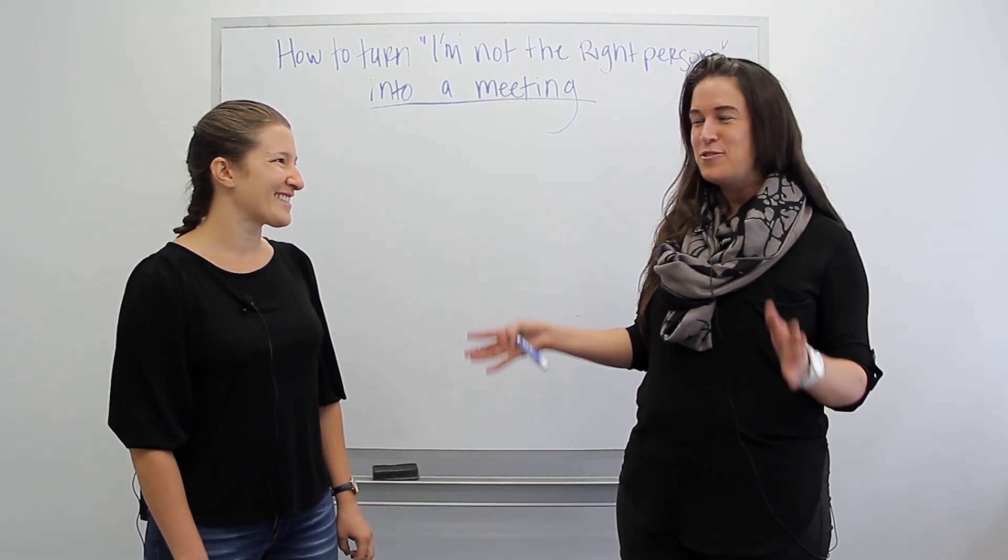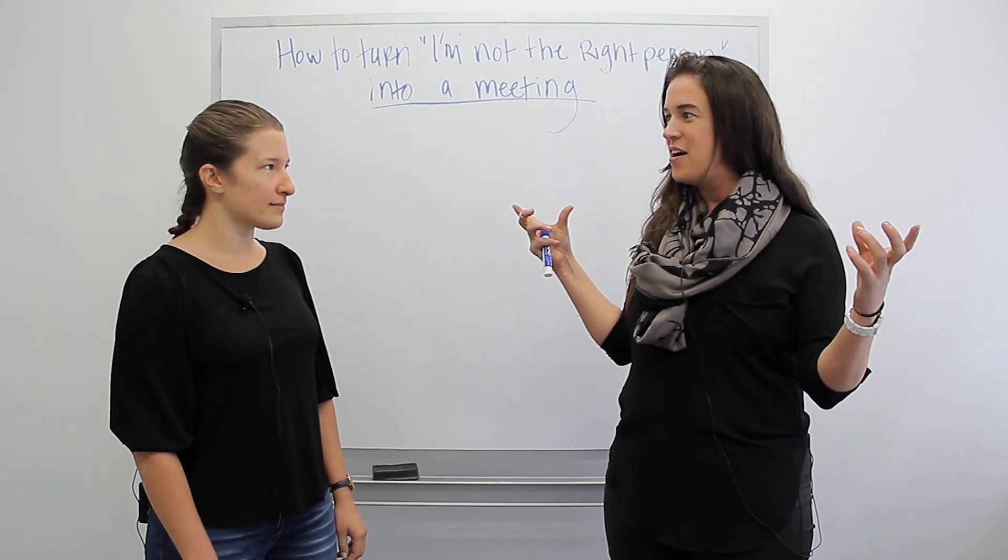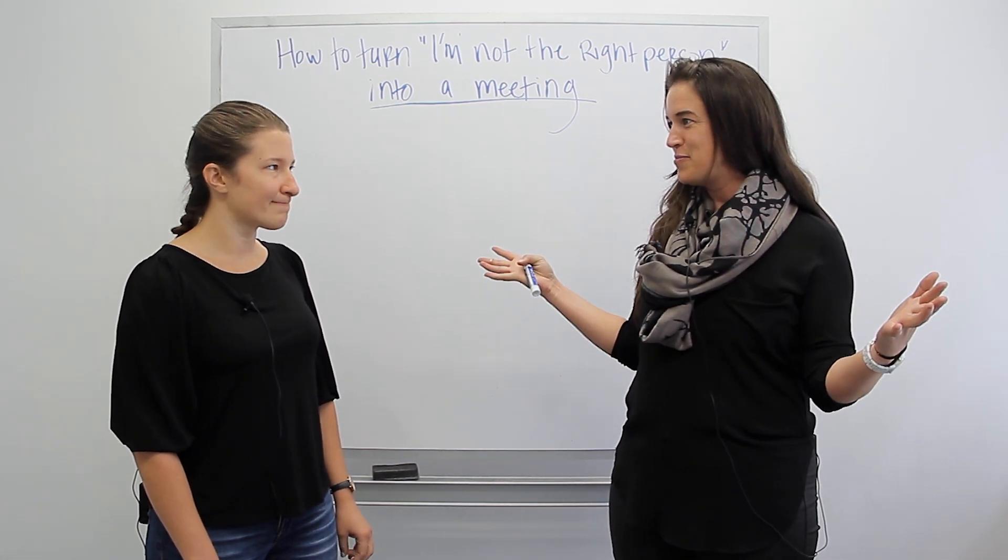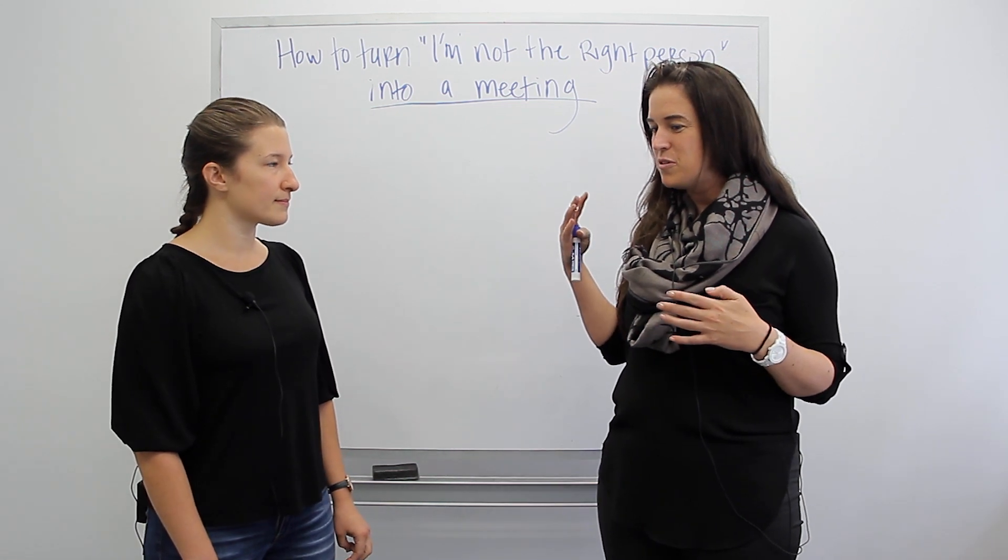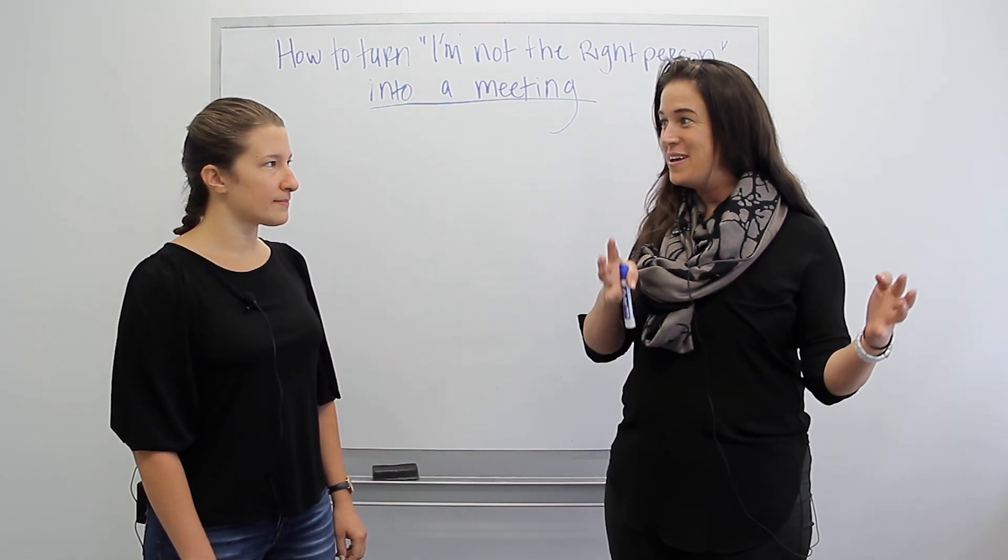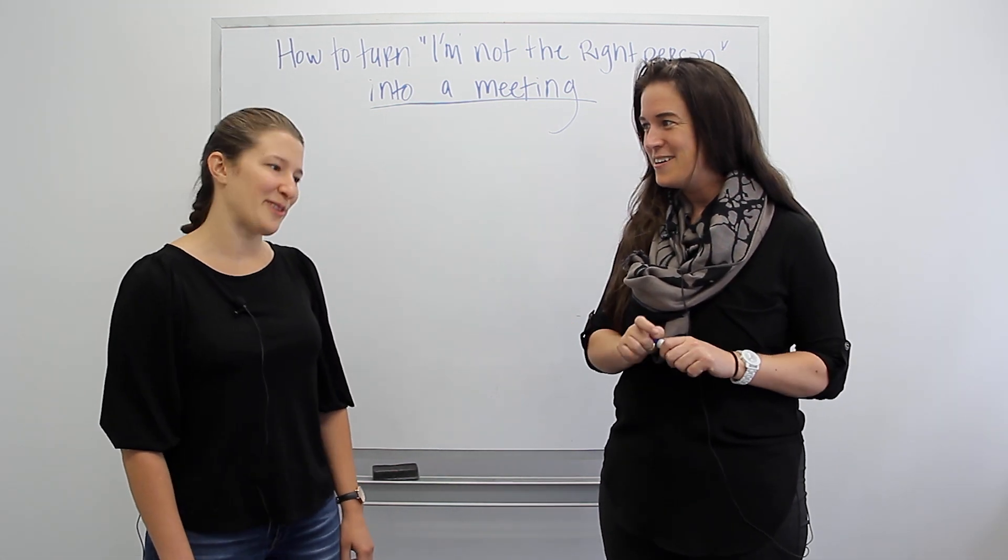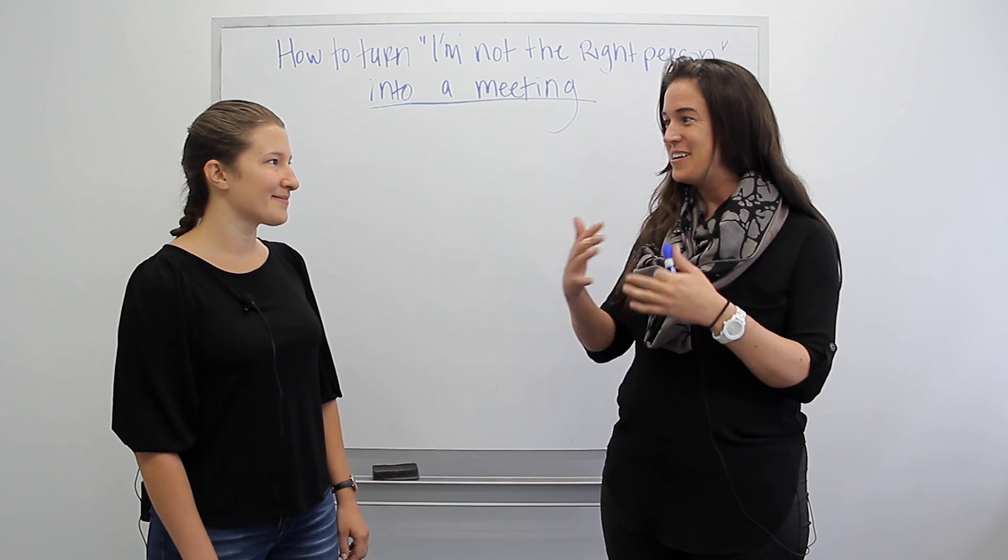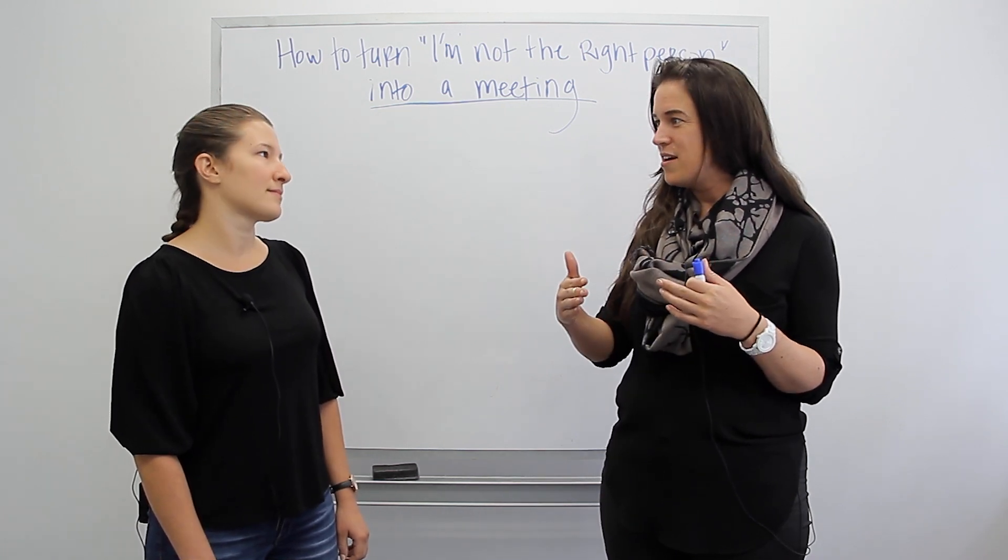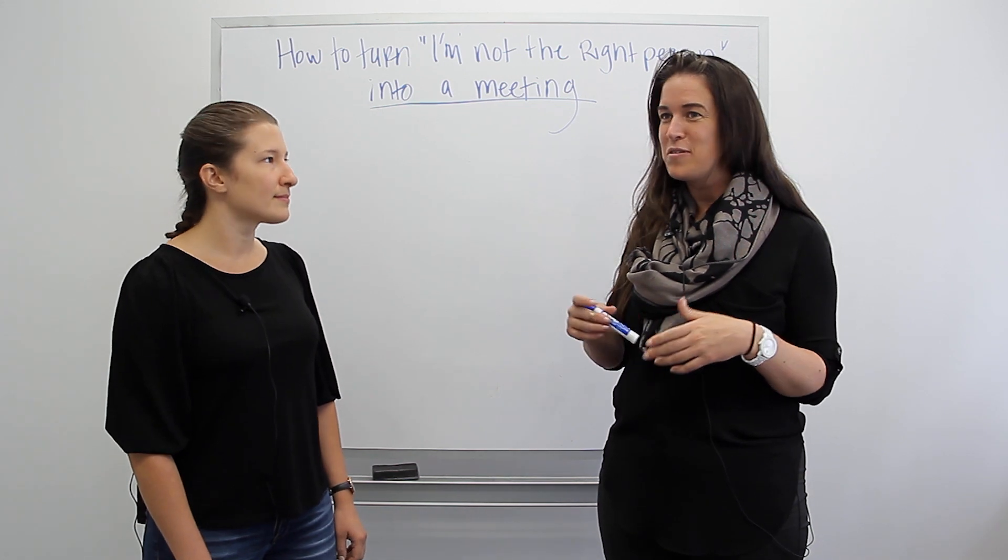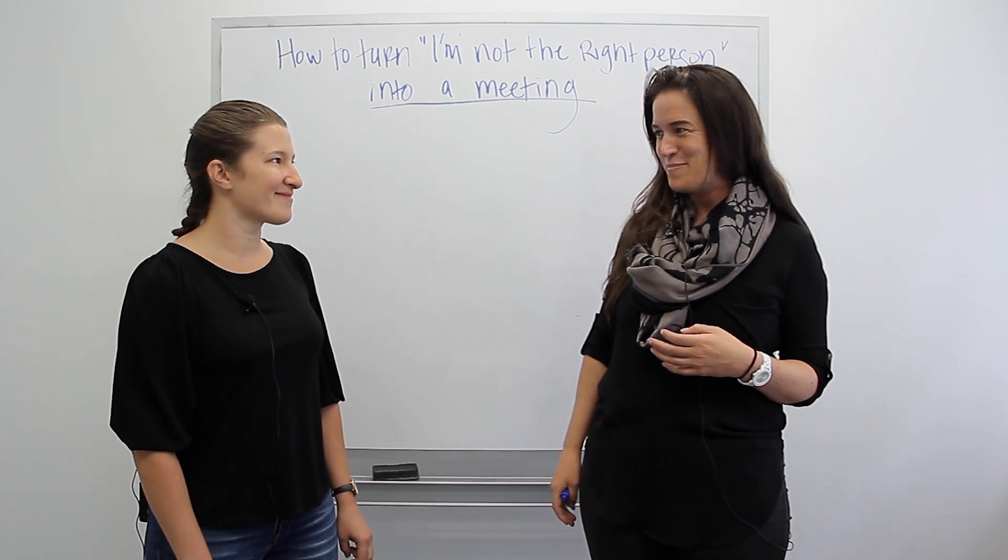I wanted to have you join us today because we wanted to cover a topic of the classic objection of, hey, I'm not the right person whenever someone reaches out to you. So I know that you've been responsible for, you really head up our enablement here too. And you've been very involved in the coaching. You have a teaching background, correct? Yes. So I know that you have a predilection and a love towards that. And so I know that you've been involved in purchasing a lot of software. And so I wanted to ask you a couple of questions and unpack the six step process of how to turn I'm not the right person into a meeting.